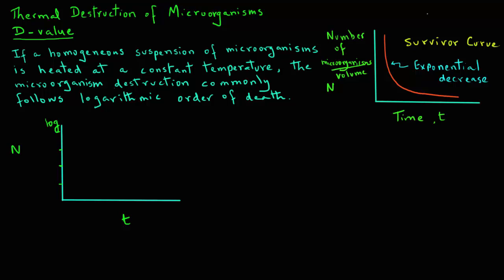What we have here on the y-axis is the log scale. So, we have ten, hundred, thousand, ten thousand, for example, for number of microorganisms per unit volume. And if we plot that survival curve, we will notice that we get a straight line.